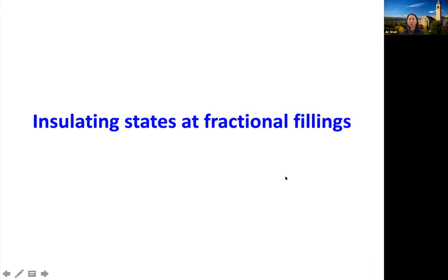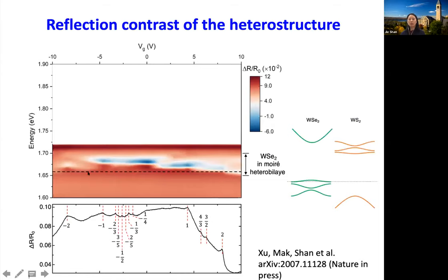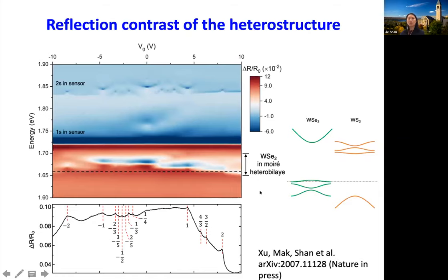Because of the moiré superlattice potential, the optical response from the sample and the sensor fall into different spectral windows, which is convenient for us to see their individual responses. Furthermore, the band alignments are chosen such that for a large range of gate voltage, electrostatic doping only goes into the sample and keeps the sensor charge neutral. The y-axis is photon energy and the x-axis is gate voltage — electron doping on one side, hole doping on the other. The fundamental exciton modulated by the moiré superlattice changes its intensity with doping density.